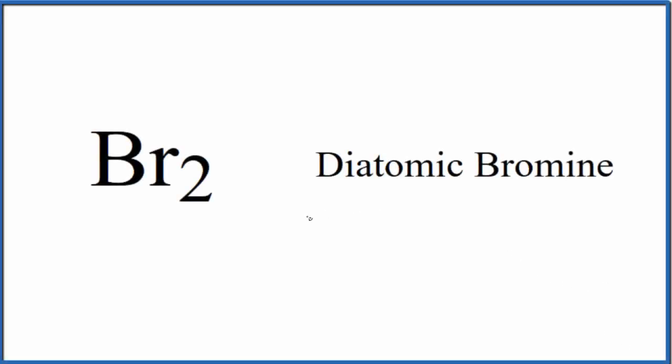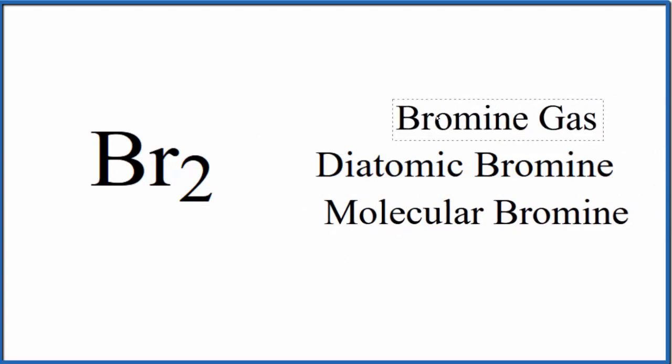In this video we'll write the Lewis structure for Br2, that's diatomic bromine. You'll sometimes see this called molecular bromine because we have two Br atoms bonded together, and more commonly as bromine gas. These are the different names for Br2. So let's write the Lewis structure. First thing we need to do: count the valence electrons.